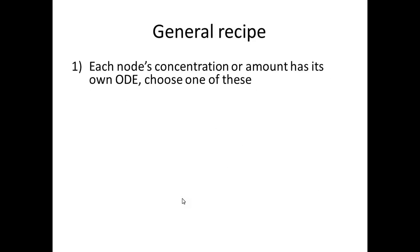So now to the general recipe. Number one, identify which are the states and this is basically all the nodes in the interaction network and you can choose them to be specified either in concentration or amount and you have to choose one of these.